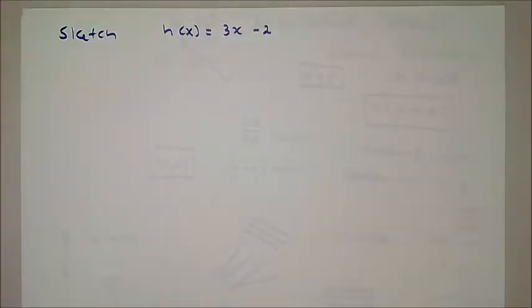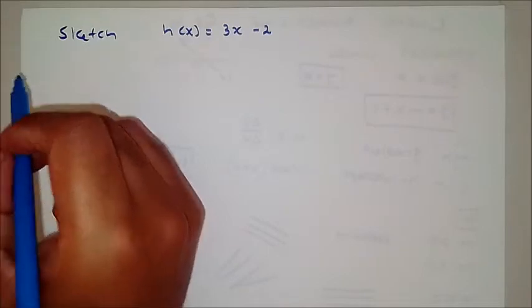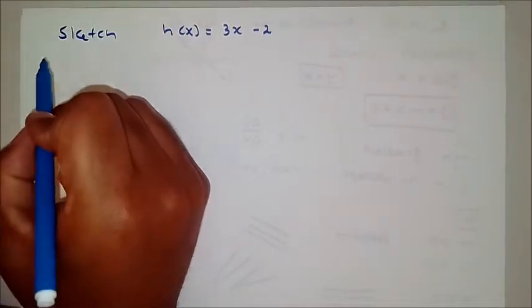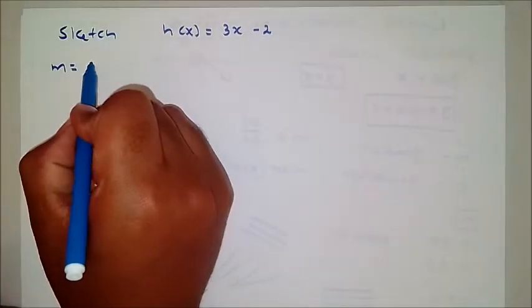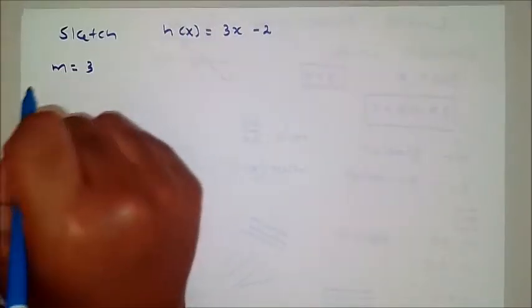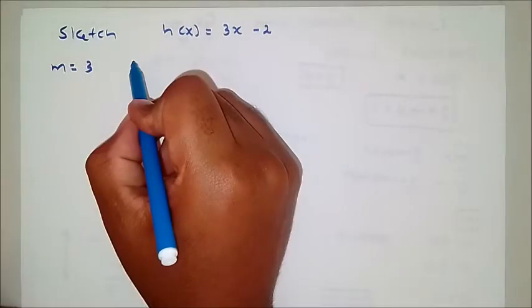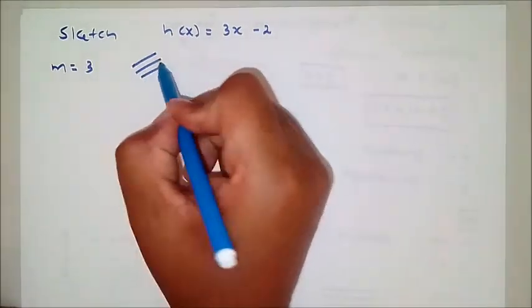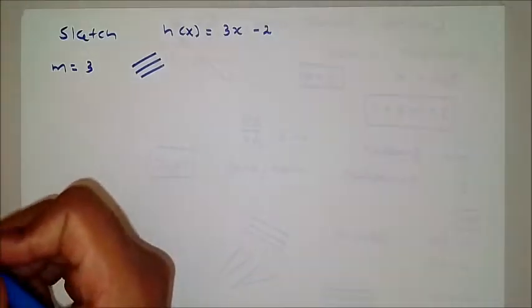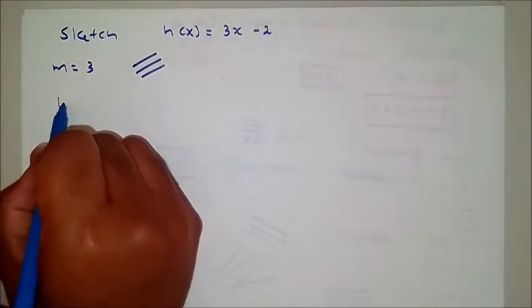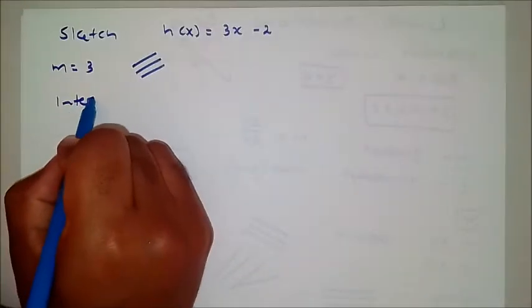You are given h(x) = 3x - 2 and you are told to sketch the function. First and foremost, you can see that the gradient equals 3, so your function is going to be in this manner. When you sketch any function, you must find the intercepts.